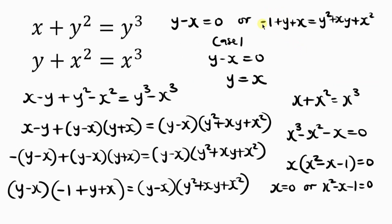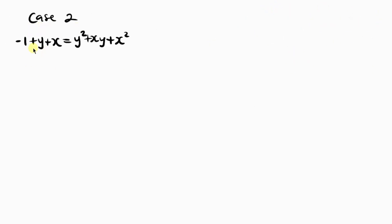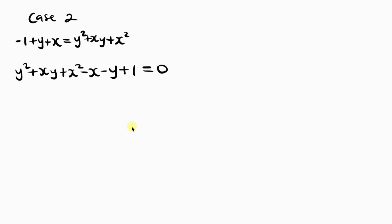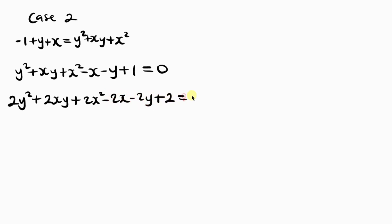Now let's solve Case 2: negative 1 plus y plus x equals y squared plus xy plus x squared. Moving everything to the right-hand side gives y squared plus xy plus x squared minus x minus y plus 1 equals 0. To make this factorizable, I'm going to multiply through by 2, giving 2y squared plus 2xy plus 2x squared minus 2x minus 2y plus 2 equals 0.